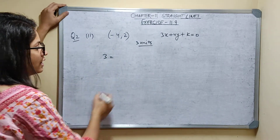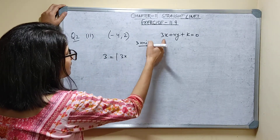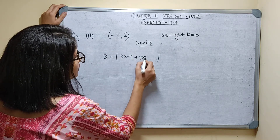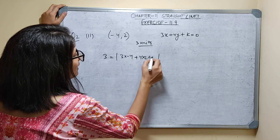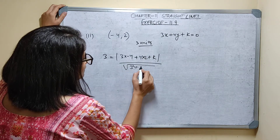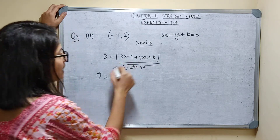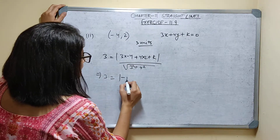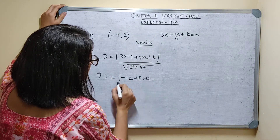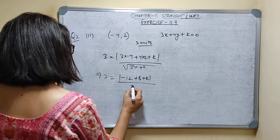So, 3 units is given. It is given: mod of 3 into — at the place of x I will write minus 4 — plus 4 into — at the place of y I will substitute 2 — plus k, upon root of 3 squared plus 4 squared. So you will get 3 is equal to the expression, and root of 9 plus 16 equals 5.